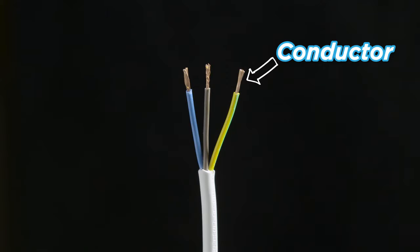On the other hand an insulator is anything that does not allow electricity to pass through it like rubber.